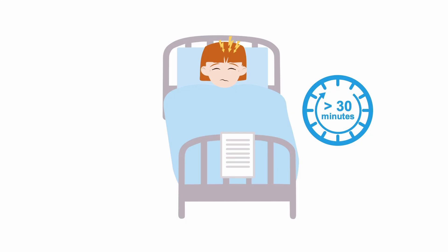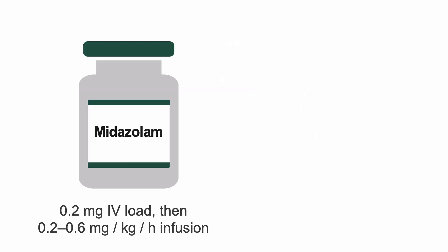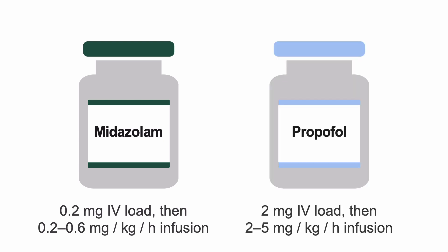If the patient is not responsive to first- and second-line medications or is seizing for more than 30 minutes, go ahead and intubate the patient and start administering general anesthesia. Use either midazolam 0.2 mg per kg IV load followed by 0.2 to 0.6 mg per kg per hour infusion, or propofol 2 mg per kg IV load followed by a 2 to 5 mg per kg per hour infusion.